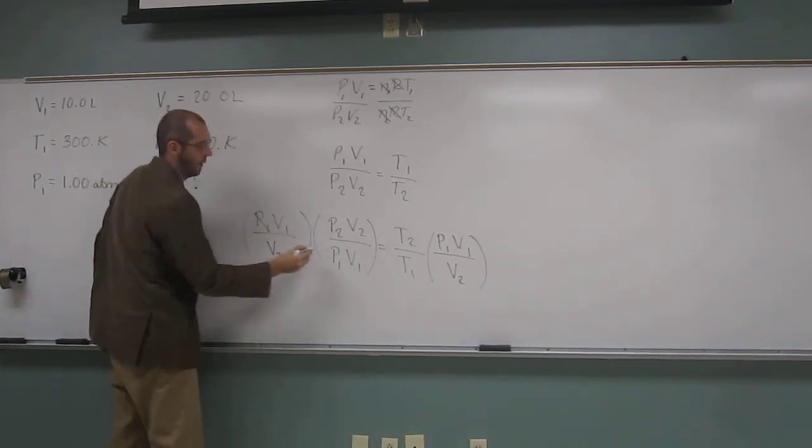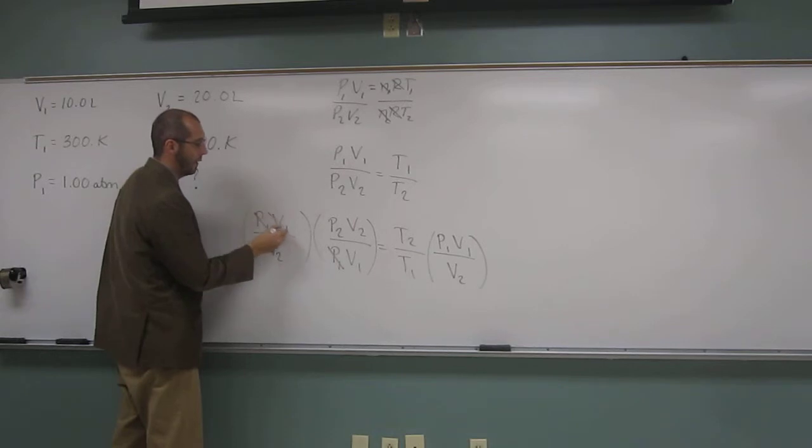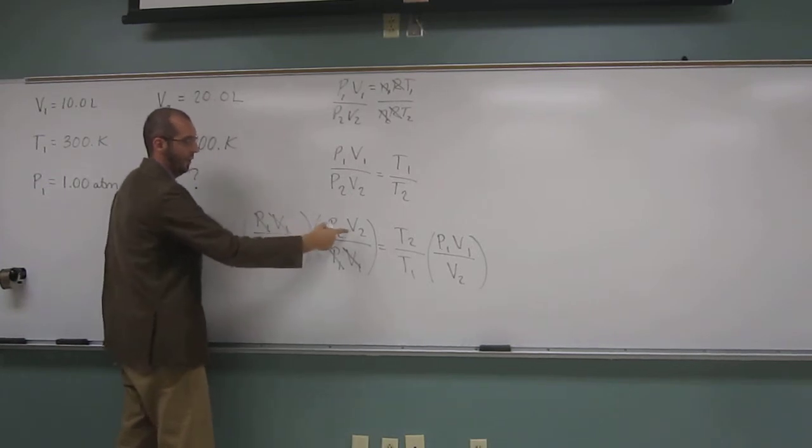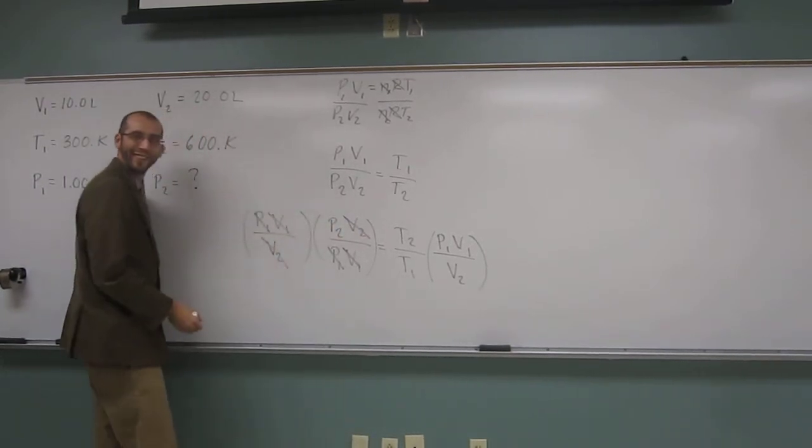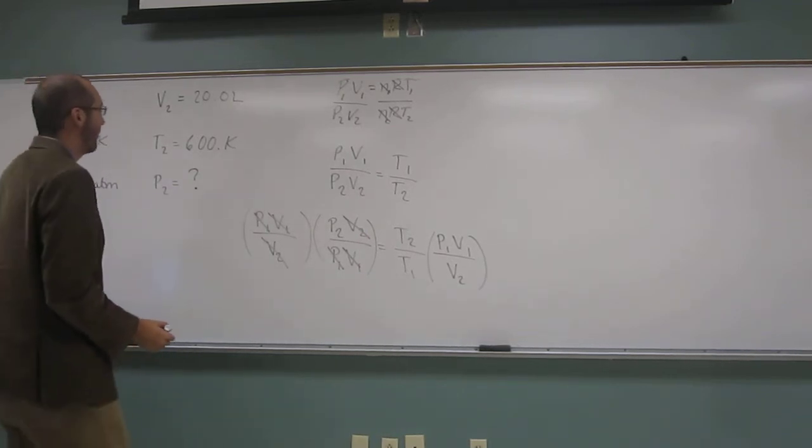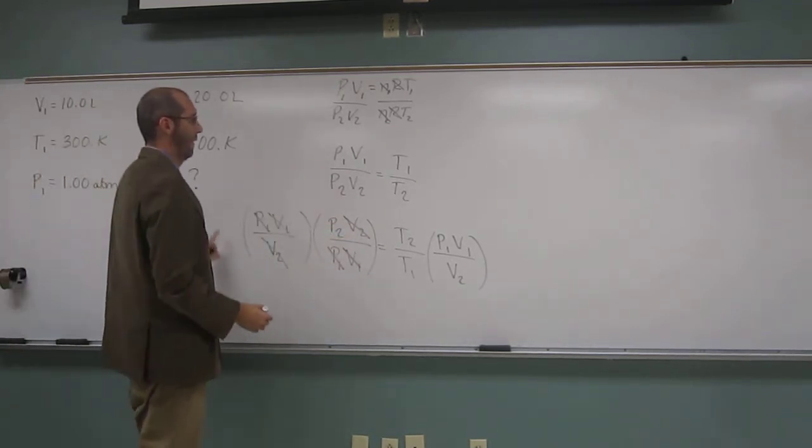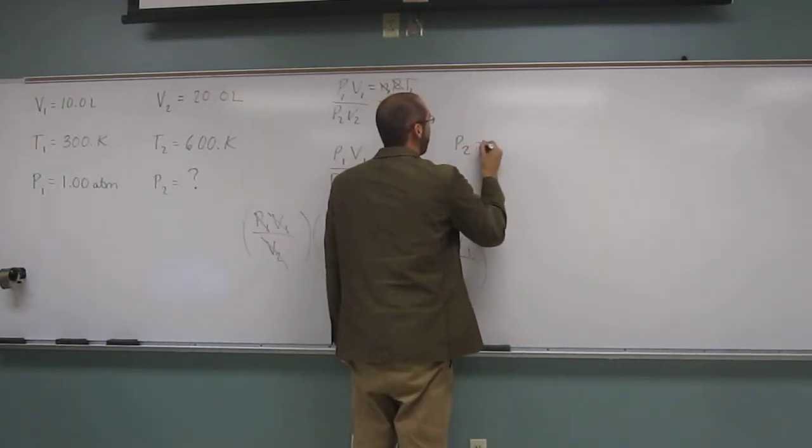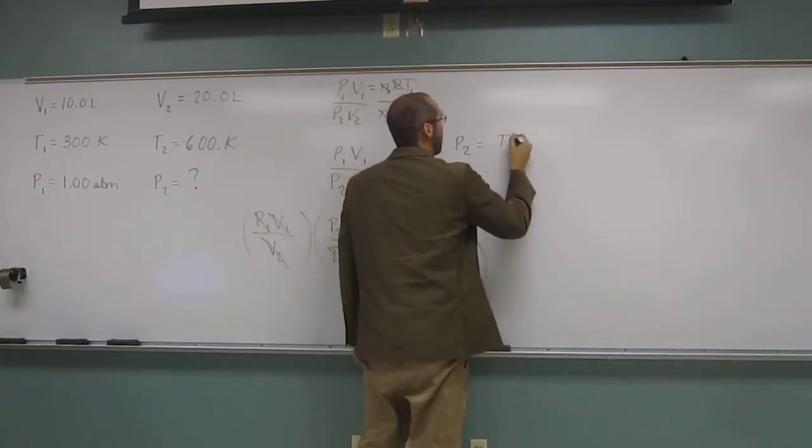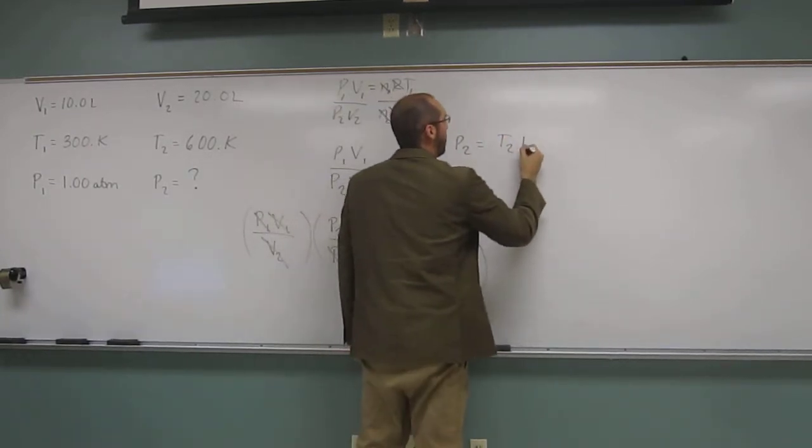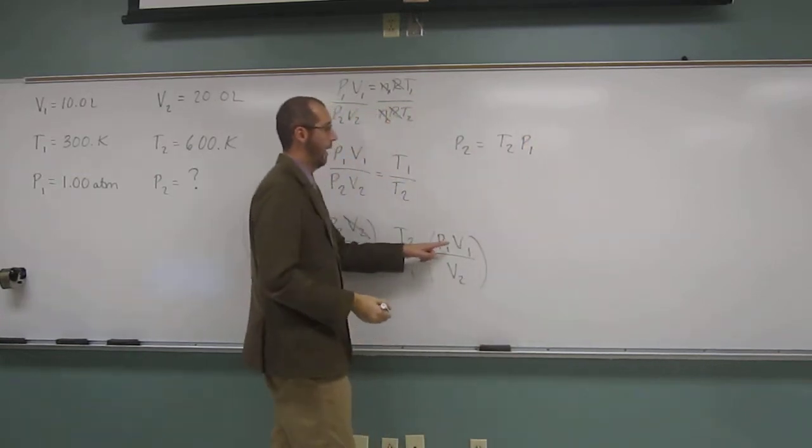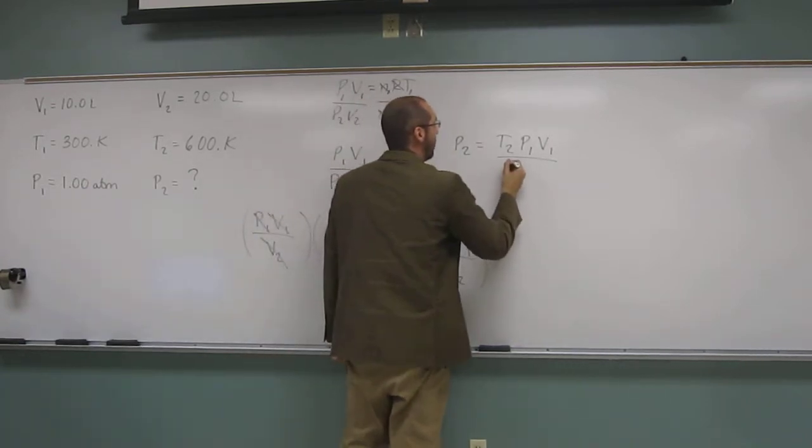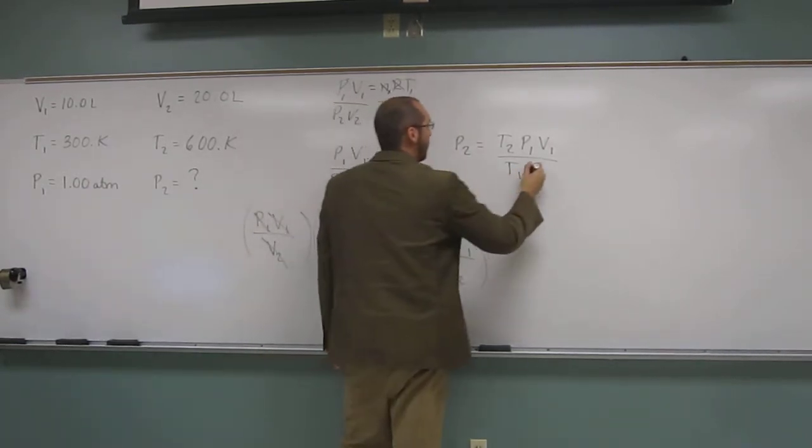Does P1 cancel? Yes. Does V2 cancel? Yes. Okay. So what are we left with on this side? Just P2, right? We've isolated it. Okay. So let's write what we've got. P2 equals T2 times P1 times V1 divided by T1 times V2.